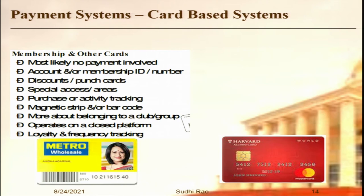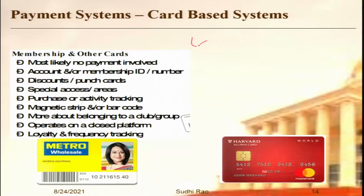Membership cards are used just to retain business — they do not have credit or debit. Whenever you buy using this card, the merchant tracks your purchases and rewards you with gift points. For example, Reliance Smart has its own card — whenever you go, you show the card and get certain discounts because you are a member. This is a way to retain customer loyalty, which is why they are also called loyalty cards.